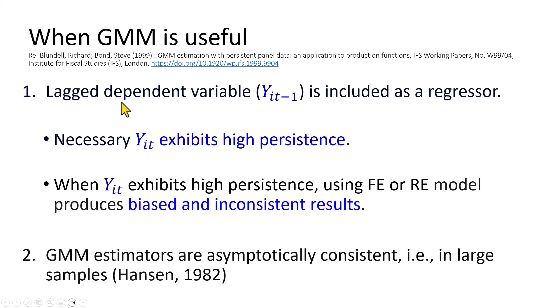And GMM comes in quite handy when the lag-dependent variable has to be included as a regressor, which is necessary when the series exhibits high persistence. When that's the case, the use of fixed effects or random effects estimator would not help, because we're still going to be left with biased and inconsistent results. In all, GMM estimators are found to be asymptotically consistent.